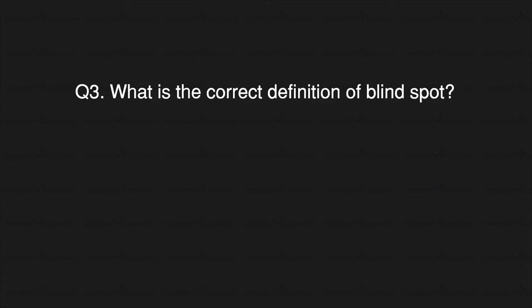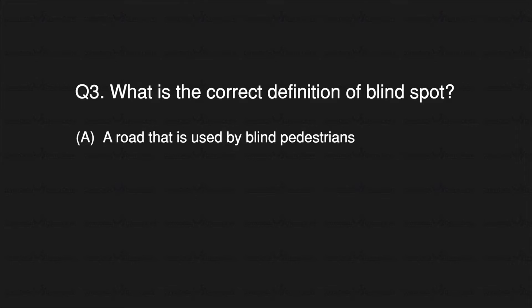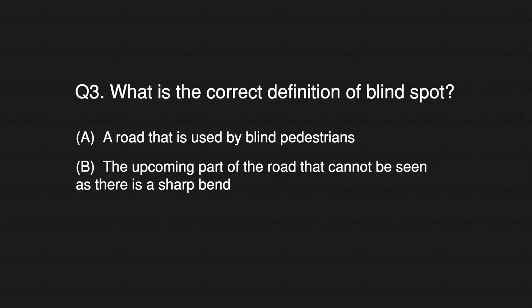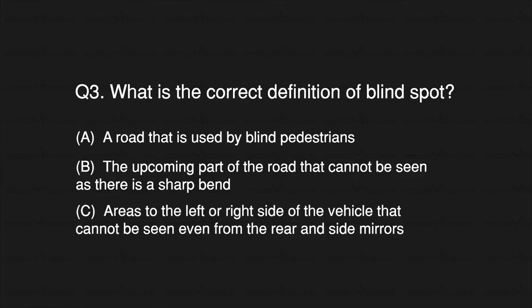Question 3: What is the correct definition of blind spot? A. A road that is used by blind pedestrians. B. The upcoming part of the road that cannot be seen as there is a sharp bend. C. Areas to the left or right side of the vehicle that cannot be seen even from the rear and side mirrors.